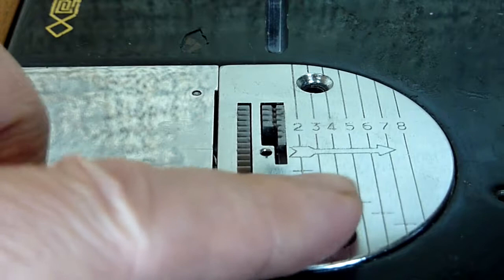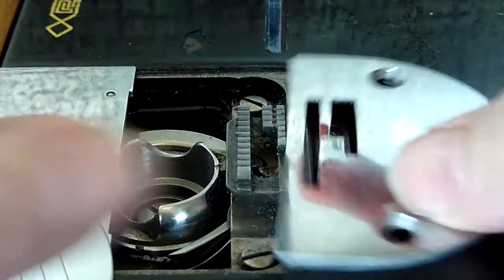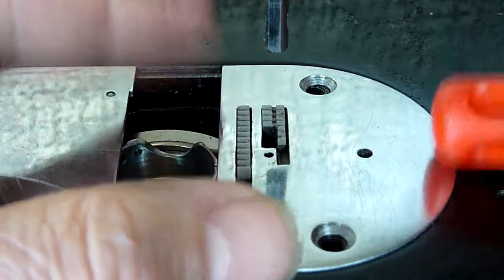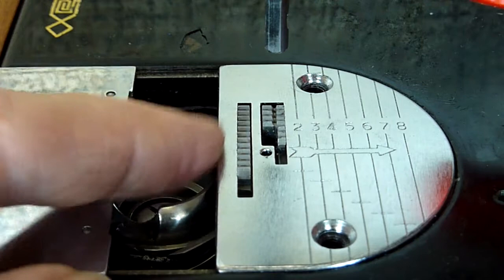But maybe you can see here that the tolerances to the feed dog are a lot less than before. Remove it again and compare it to the old one. Here you got much more air to the side of the feed dogs and this new one I got.